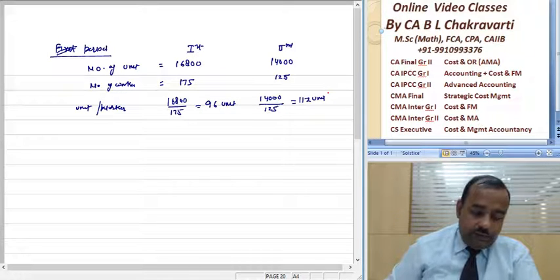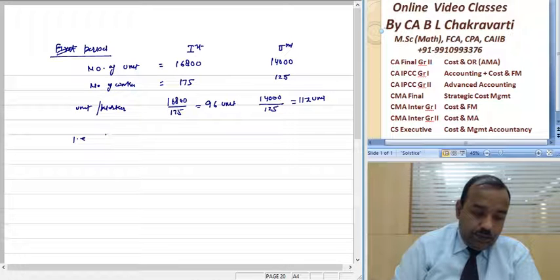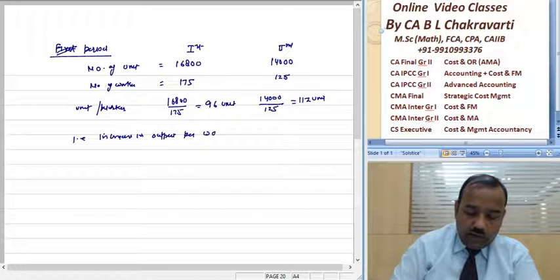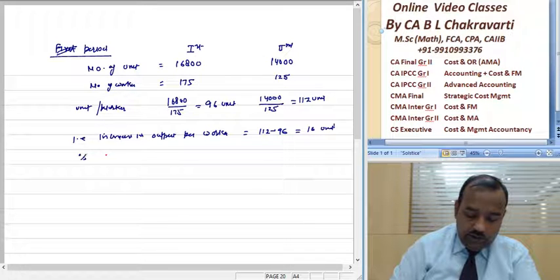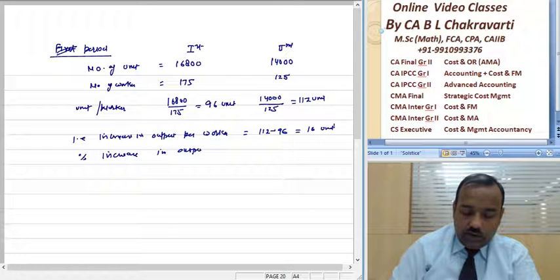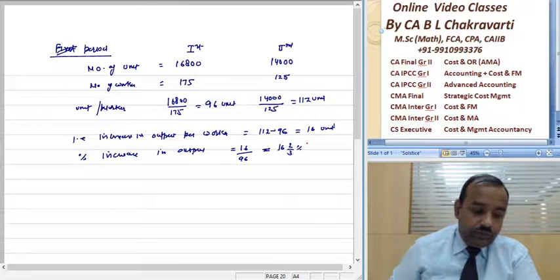That is, additional increase in output. It is 112 minus 96, so 16 units. Percentage increase in output: 16⅔ percent.